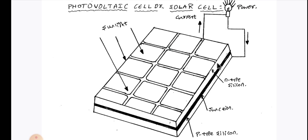The first layer has a negative charge, it is called n-type silicon, while the other layer at the bottom has a positive charge called p-type silicon.